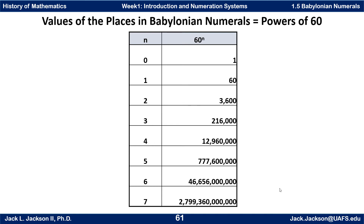Notice that with a base as big as 60, it doesn't take too many digits to get to a really large number. All two-digit numbers can get up to 3,599, and with only two digits you can reach numbers up to 3,599. You can see one advantage: they can get to large numbers very quickly, whereas it takes us more digits in our base-10 system.